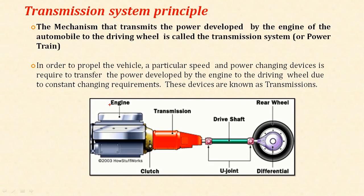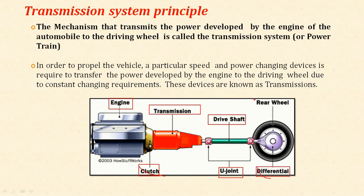The basic components of the transmission system are: the engine, clutch, gearbox, universal joint, propeller shaft or driving shaft, differential, and finally the rear wheel. The engine develops power, which is transmitted through the clutch for engagement and disengagement. The gearbox changes the gear ratio so different speeds can be taken from the transmission system, transmitted to the propeller shaft via the universal joint, then to the differential, and finally through the rear axle to the wheels.